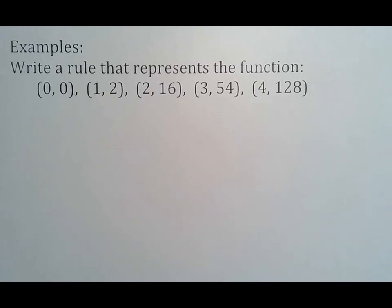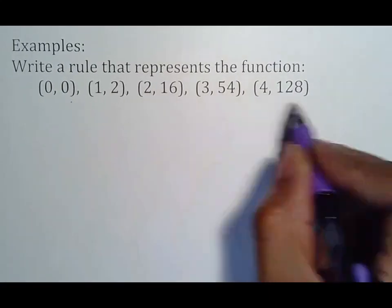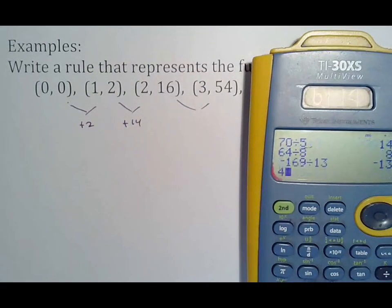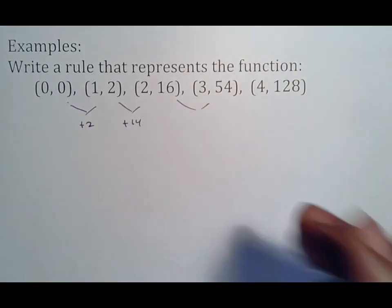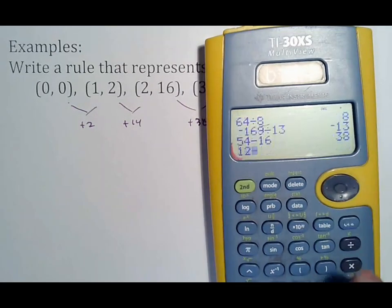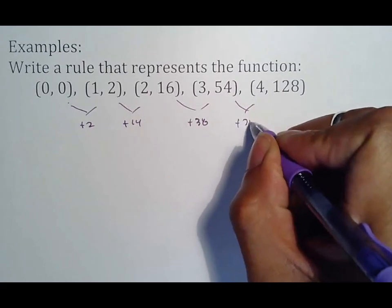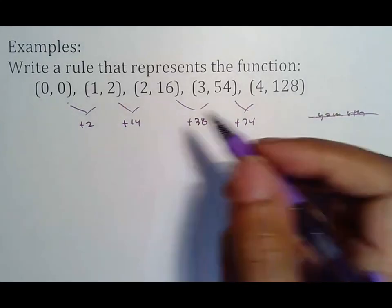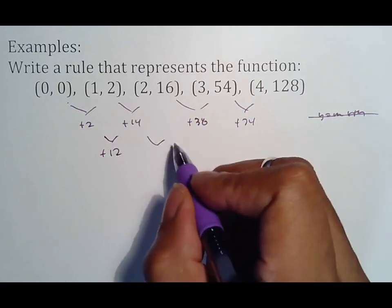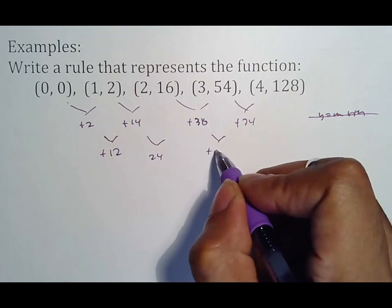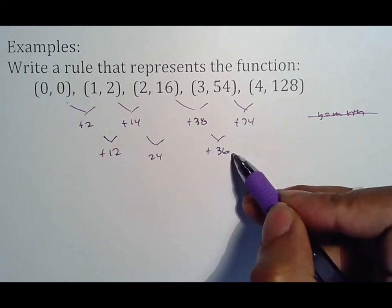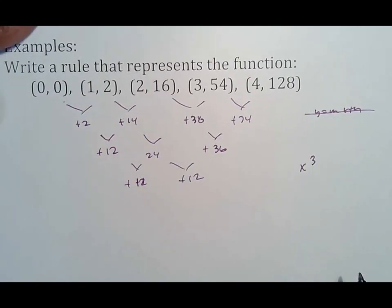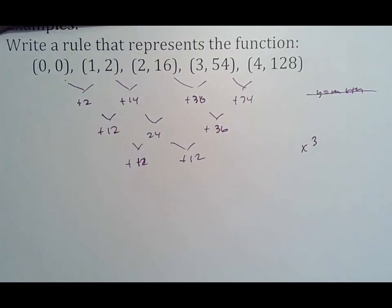When it says write a rule, first thing we want to do is see if it matches on the first. So, copy this problem and copy this work. 2 minus 0 is 2. 16 minus 2 is 14. 54 minus 16 is 38. 128 minus 54 is 74. Obviously, that's not x. If this was a match, that would just be a regular x, and you would use y equals mx plus b. So, this is plus 12. This is plus 24. And this is plus 36. That means it's not an x squared because that's our second check. What we're doing now is plus 12 and plus 12, which means that this is x to the third.